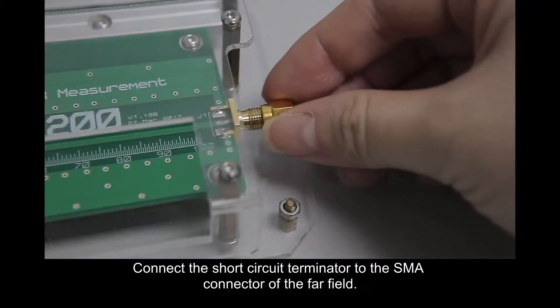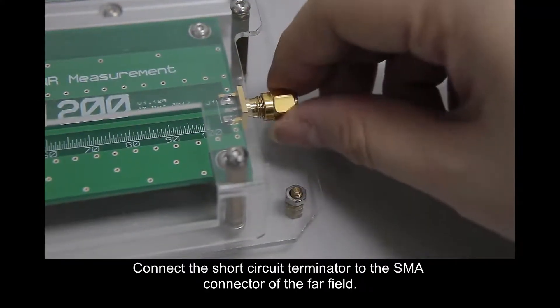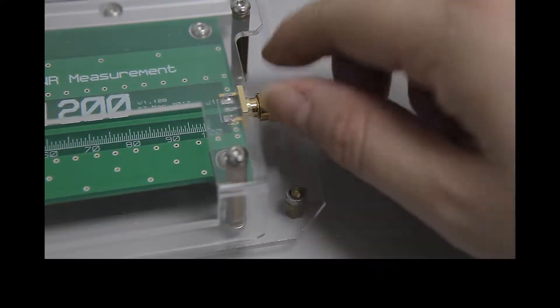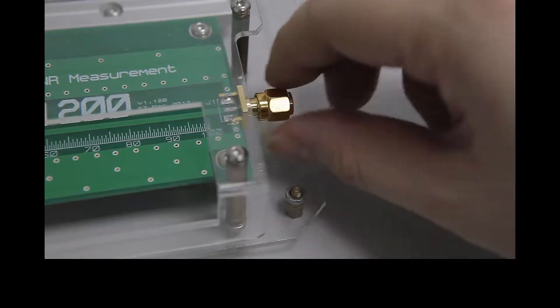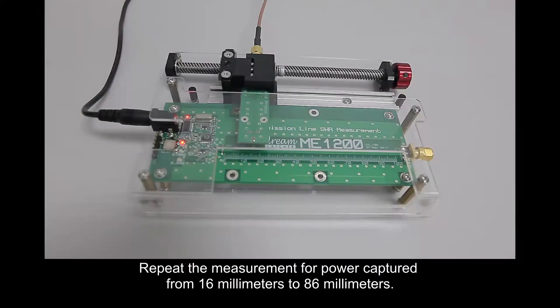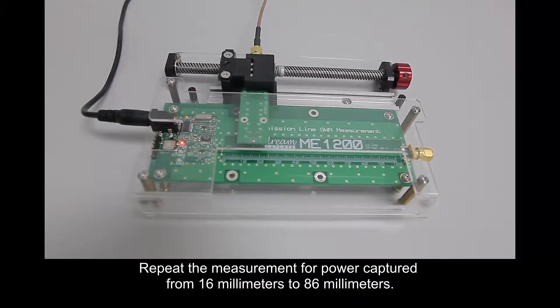Connect the short circuit terminator to the SMR connector of the far field. Repeat the measurement for power captured from 16 mm to 86 mm.